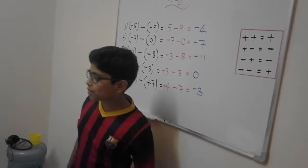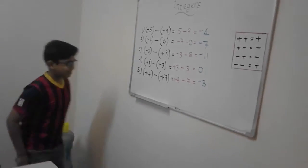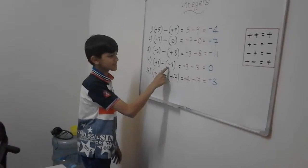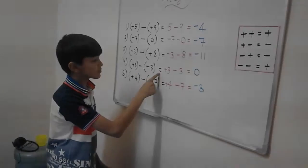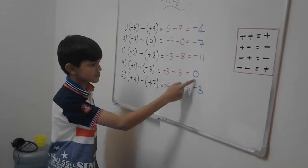Come. The question is plus 3 minus plus 3. So the answer is equal to plus 3 minus 3 is equal to 0.